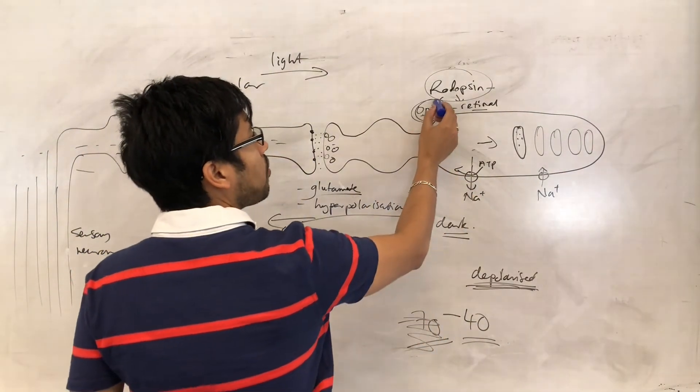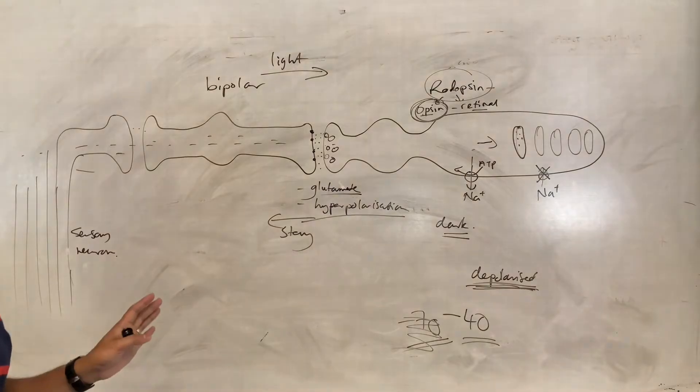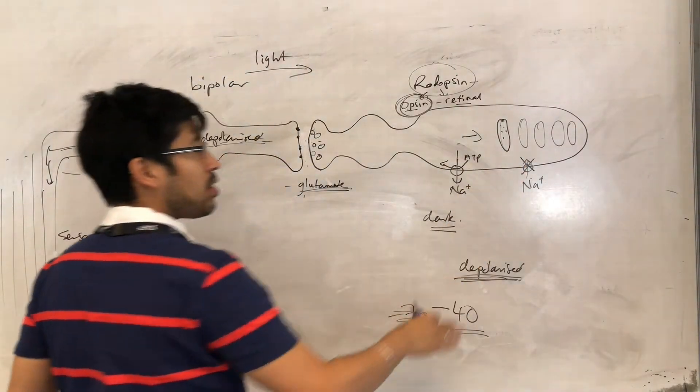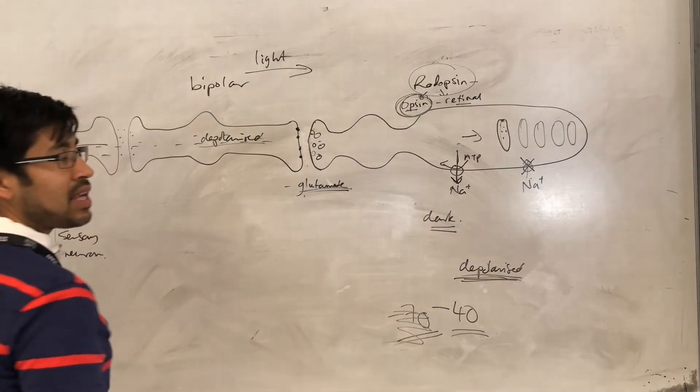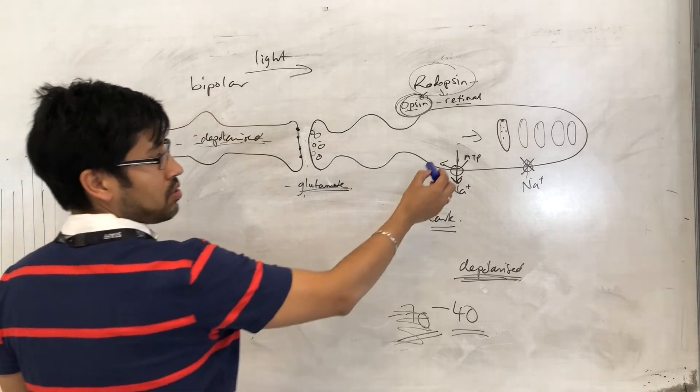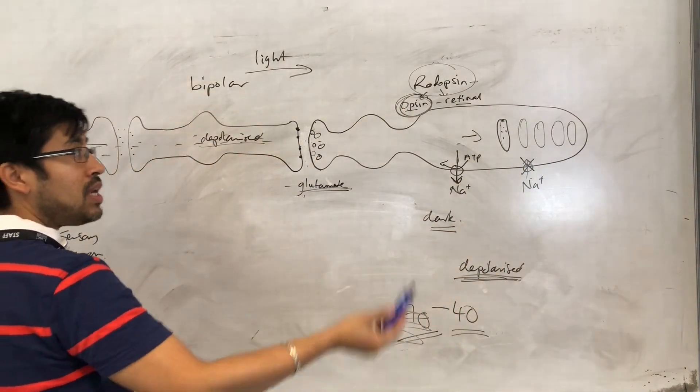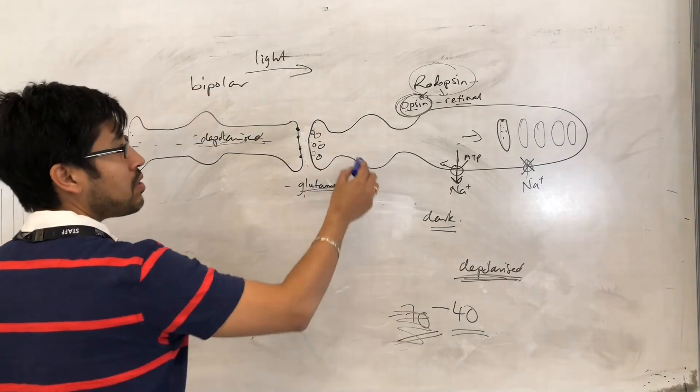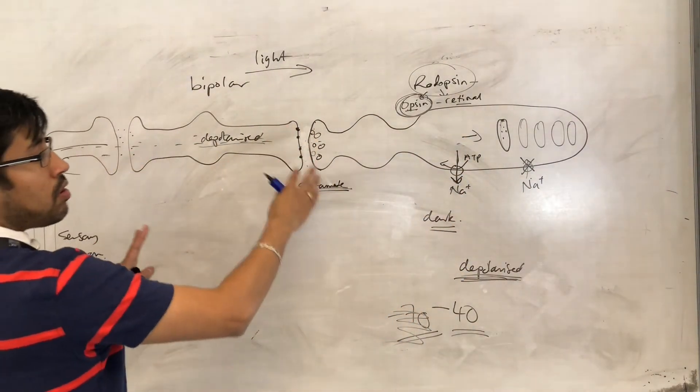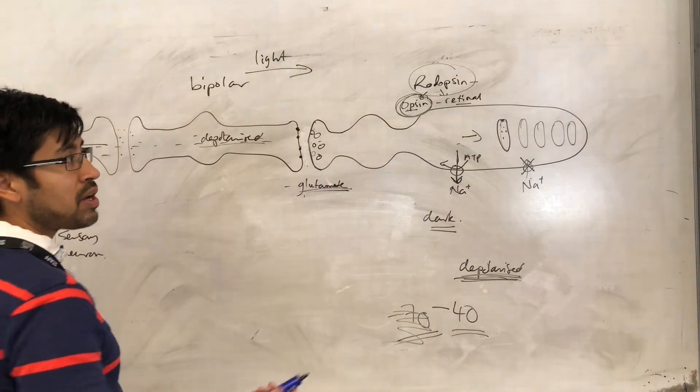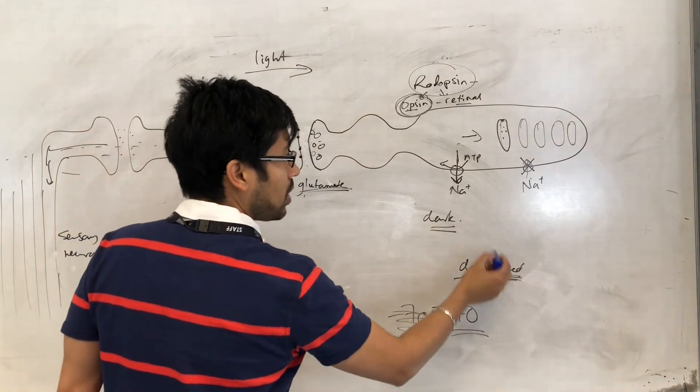But long story short, when opsin is present, this sodium channel is closed. And so when those channels are closed, the active transport of sodium out of the cell is still happening. So sodium is still being removed from the cell, but it is no longer being allowed to come into the cell, and that causes the cell to become hyperpolarized. So remember, in the dark, it was spending most of its time being depolarized because sodium was allowed to come into the cell through the channel.